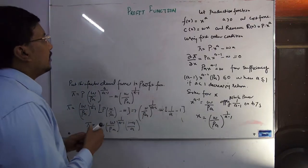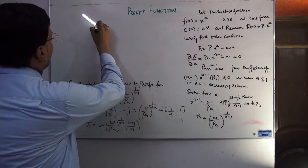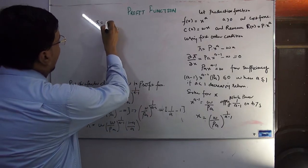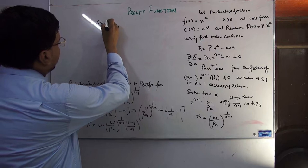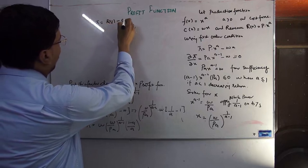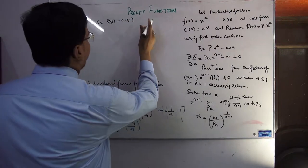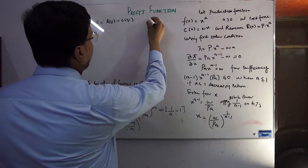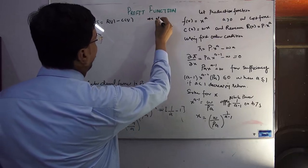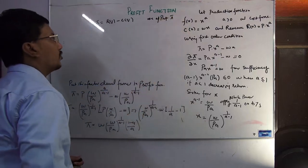Profit is represented by pi (π). Revenue is a function of q and cost is also a function of q. We are interested in maximizing profit.